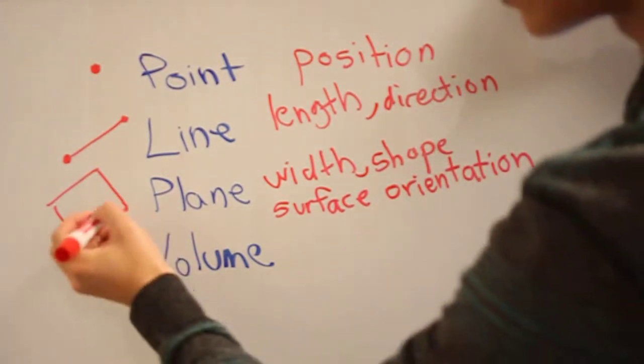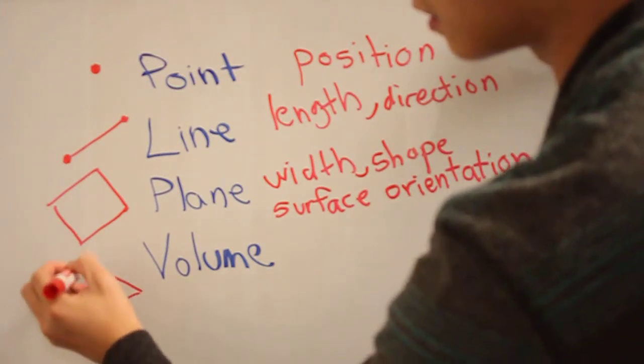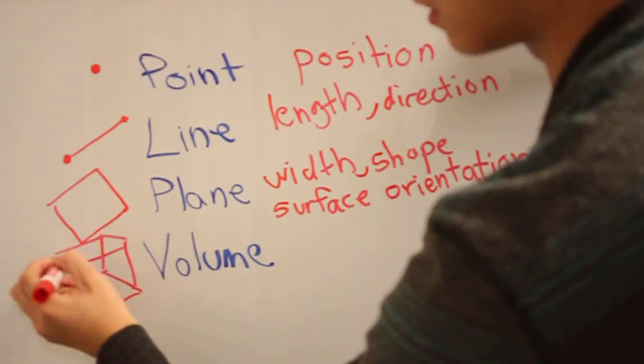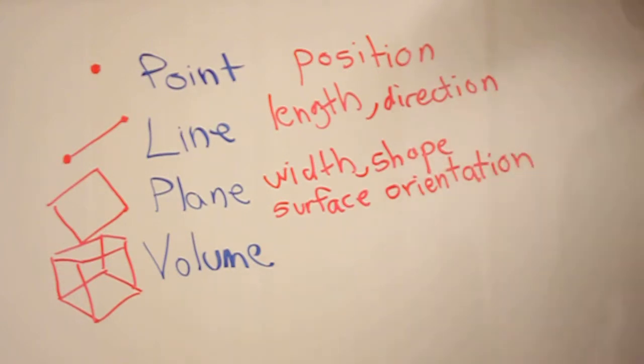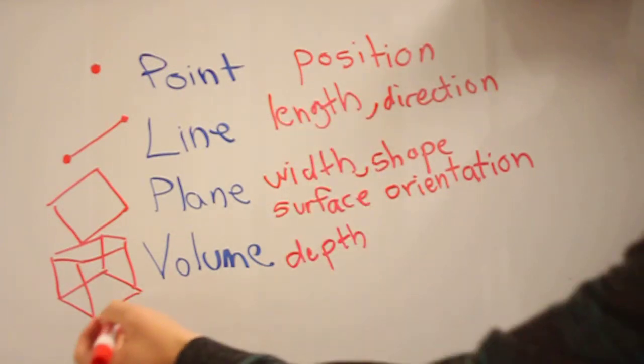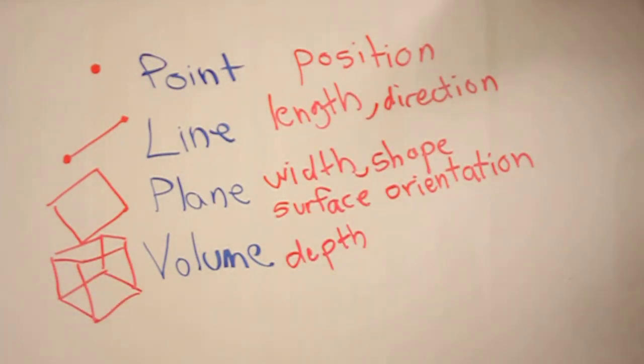Finally, you have volume, where you take that plane and extrude it in a third dimension. Volume has all of these properties. It also has depth in addition to length and width, which is this new third dimension measurement of distance.